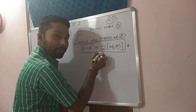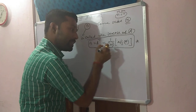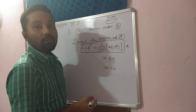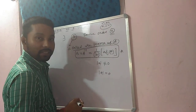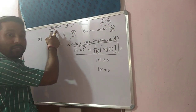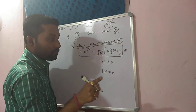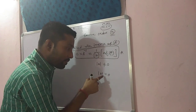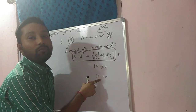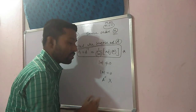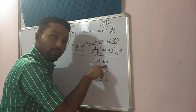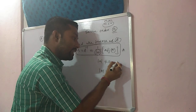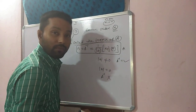Remember, 1 by determinant of A — this means determinant of A cannot be 0. If the determinant of A is 0, it will be undefined, because anything divided by 0 is undefined. So first of all, you have to check whether determinant of A is equal to 0 or not. If determinant of A is equal to 0, then inverse does not exist — A to the power minus 1 does not exist. But if determinant of A is not equal to 0, meaning any real number other than 0, whether negative or positive, then inverse exists and we can find the value of A to the power minus 1.